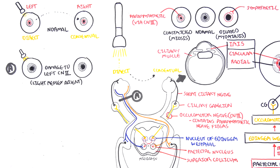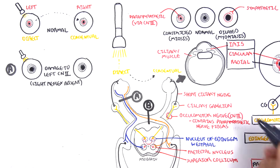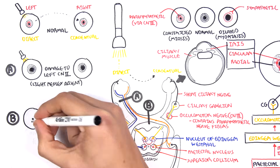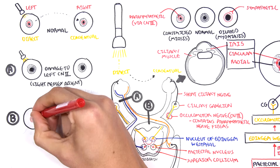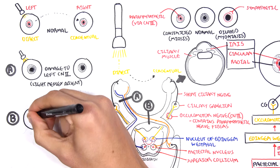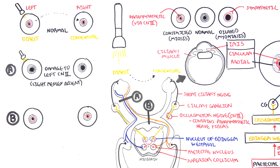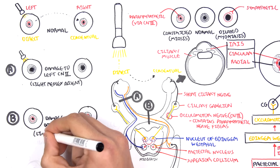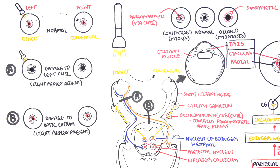What happens if you have damage to the optic chiasm? When we shine light on the left eye, the signal is still being sent along the intact ipsilateral optic nerve to the pre-tectal nucleus and still crosses over. So both the left and right nuclei of Edinger-Westphal are working. Therefore, damage to the optic chiasm means the light reflex will still be present — you still see constriction of both the left and right.